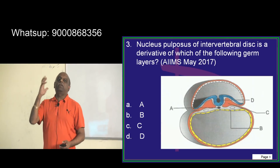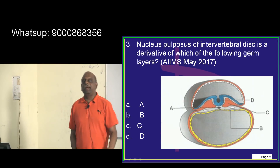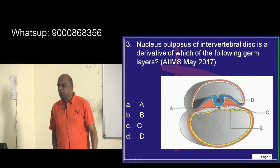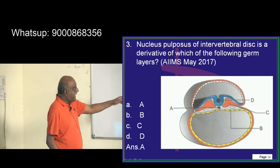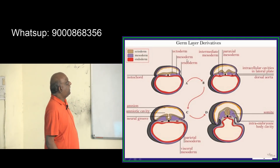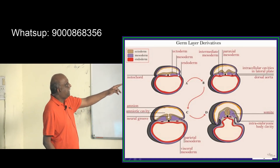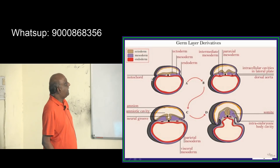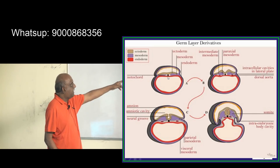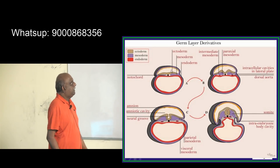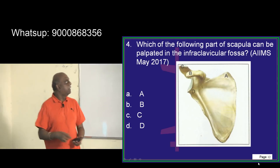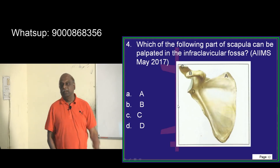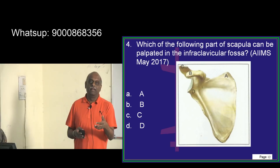Nucleus pulposus — which germ layer gives rise to it: ectoderm, endoderm, or mesoderm? This area is labeled as A, and you can see ectoderm, mesoderm, and endoderm. Now if you look at the notochord, the notochord is the one which is derived from the mesodermal part of the germ layers — that is what you need to appreciate. Now, in the infraclavicular area, which part of the scapula can you be able to feel is a very important question.